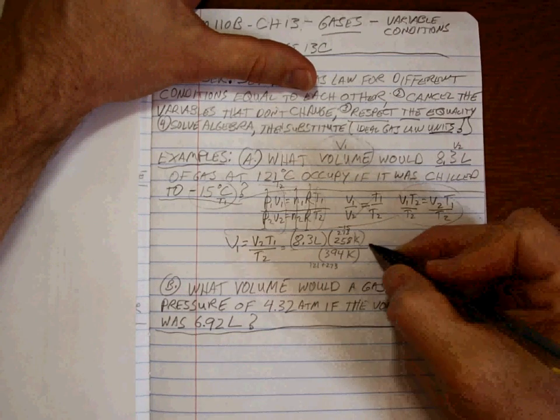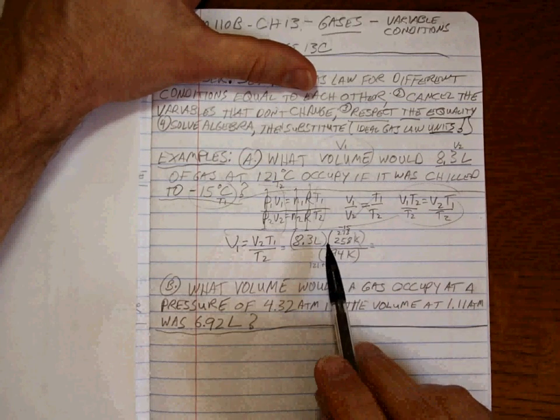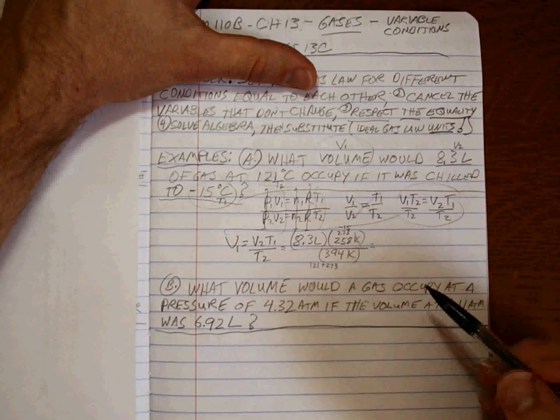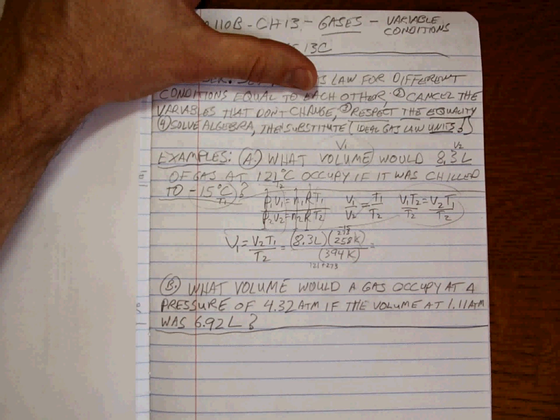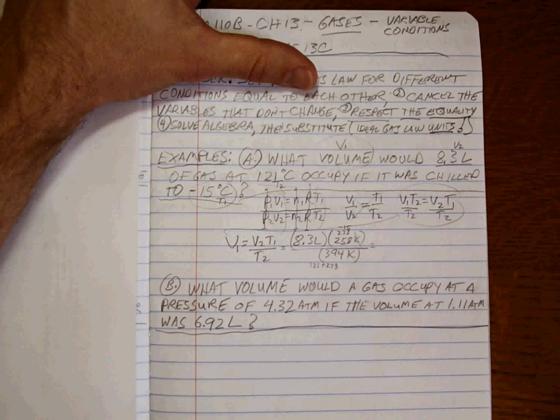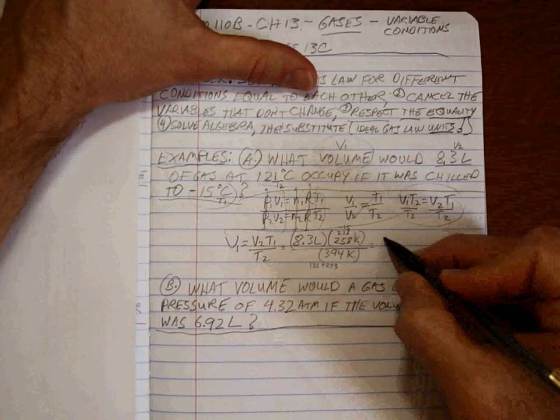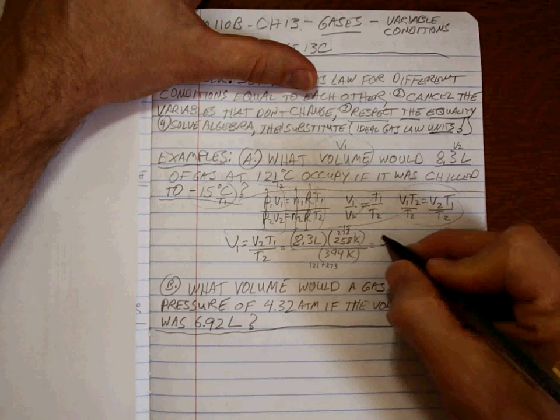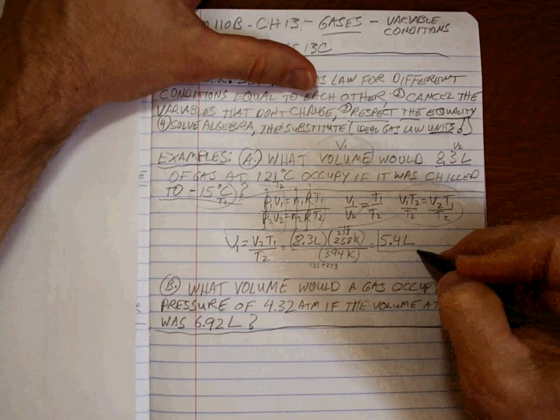All right, so the Kelvins cancel out. Even if you would have just put in the Celsius temperatures, the Celsius would have canceled out. But you would have ended up with a negative volume, or you would have ended up with an incorrect volume. You have to convert to the ideal gas law units. All right, but now that we have that, let's punch the numbers into our calculator. Okay, I get to two sig figs, because 8.3 is two sig figs. Five point four. My units are liters.